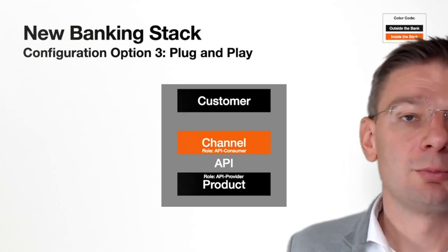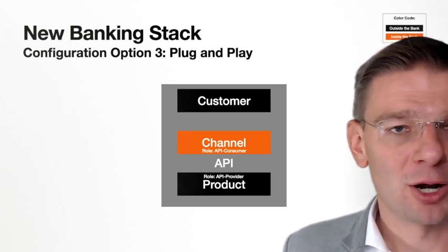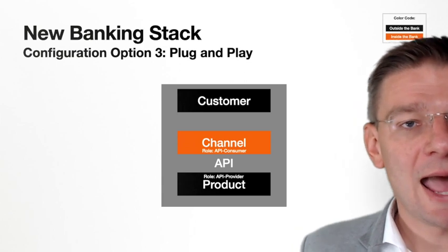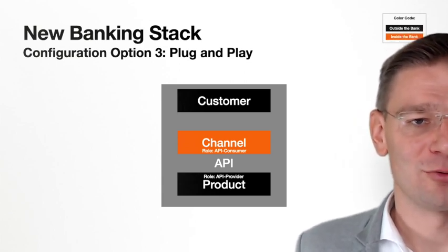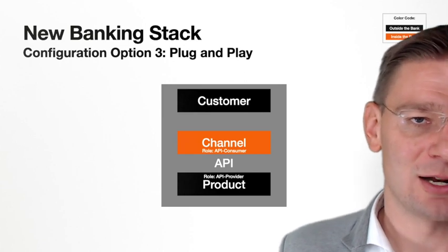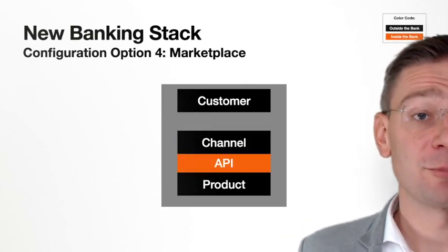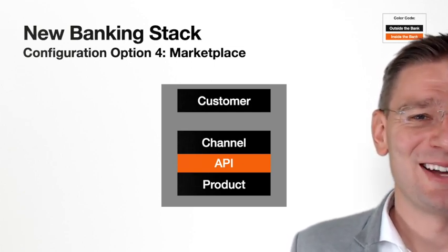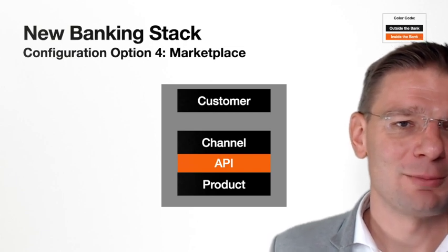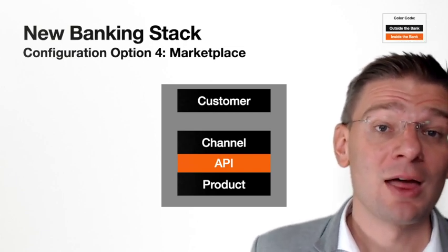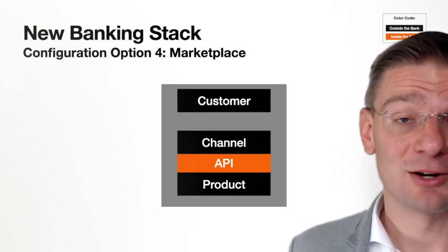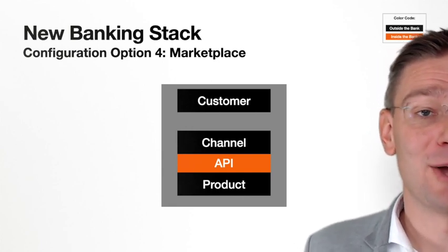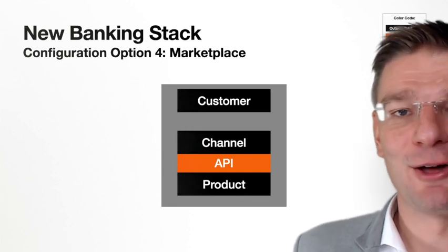It can also be that your banking product portfolio has a gap or there is some product you haven't offered so far — you can add this product to your portfolio and sell it via your own channel. A fourth option is that the bank doesn't own channel or product, but owns the middle layer — it owns the API and the marketplace, bringing together those players who have the product and those who have the channel. This is a very interesting place — maybe for a bank, maybe for some other player in the market.